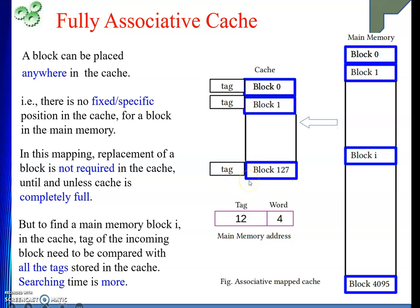The disadvantage associated is the searching time will be more. If I am looking for block I in the cache — this is my main memory position of the block — the tag of the incoming block, that means the tag of block I, needs to be compared with all the tags stored in the cache. Because I don't know where the block can be found; it can occupy any block in the cache. So for all of these tags, the incoming block's tag will be matched. Whenever there is a successful match, then only we will say the block is present in the cache — it is a hit. So searching time will be more; that is the problem here, because you need to see every block.